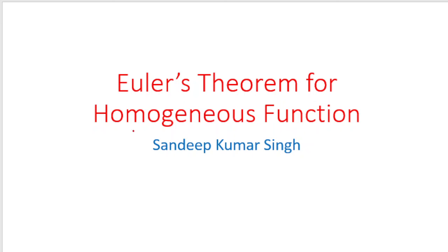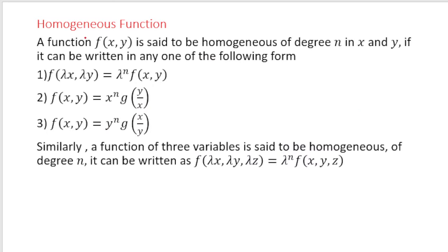First, we should be very clear about what a homogeneous function is. A function f(x, y) is said to be homogeneous of degree n in x and y if it can be written in the form f(λx, λy) = λⁿ f(x, y), where f(x, y) on the right-hand side is entirely free from λ.